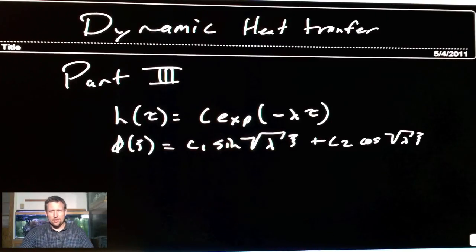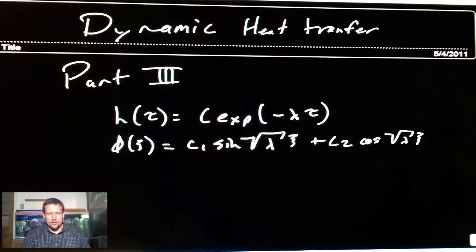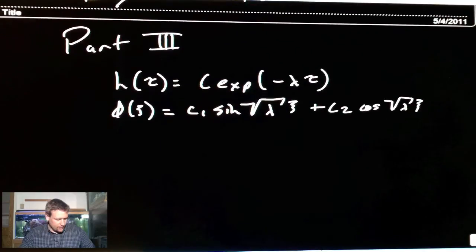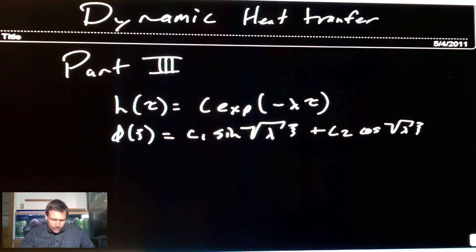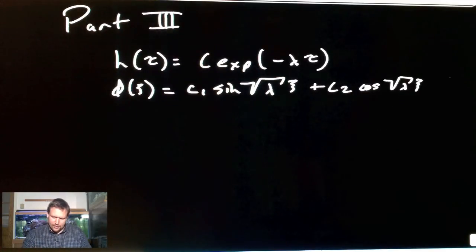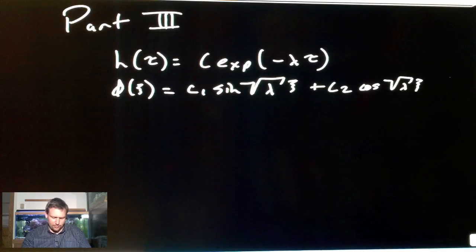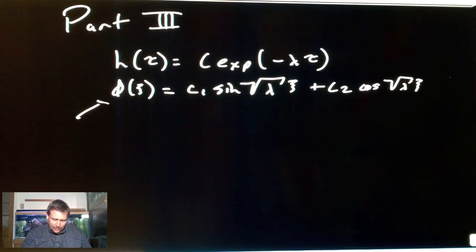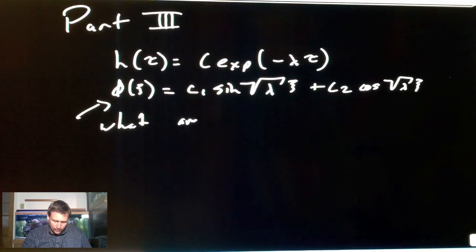Here we go. Part 3 of the solution to the dynamic temperature distribution in a rod. Not the baseball player, but a solid piece of material. Well, I guess A-Rod is pretty solid, so I guess you could maybe do a crude approximation if heat transferred through A-Rod. But anyways, here's where we left off. Part 2. Now we're part 3. We're going to start here. What are C1, C2?